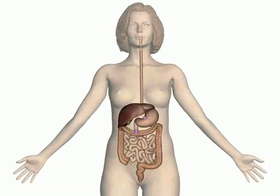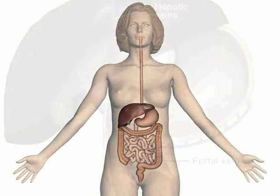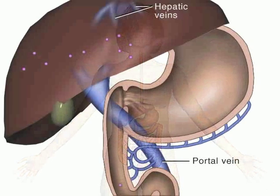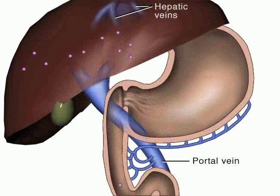Distribution begins when drug molecules enter the blood from the liver where they have been metabolized. The molecules then travel all over the body via the vascular and lymphatic systems.